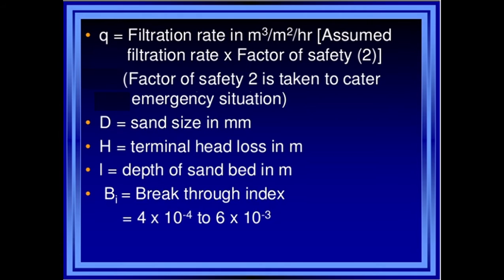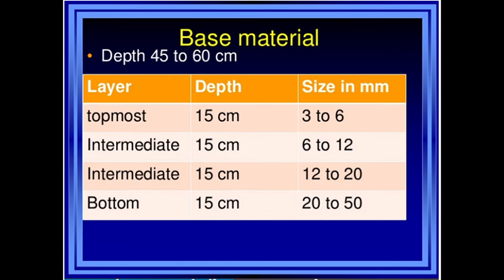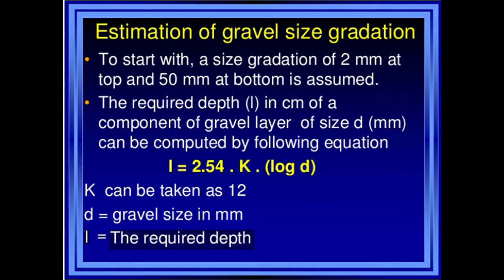The third part is the base material. The depth of base material varies between 45 to 60 centimeters. The top layer consists of a 15-centimeter layer with particle size 3 to 6 mm. The intermediate layer is 50 centimeters with size 6 to 12 mm. The second intermediate layer is about 50 centimeters with size 12 to 20 mm. The bottommost layer depth is 15 centimeters with particle size 20 to 50 mm.